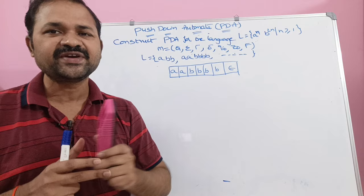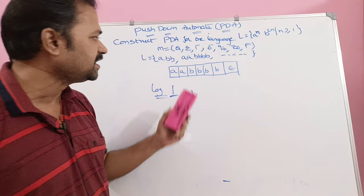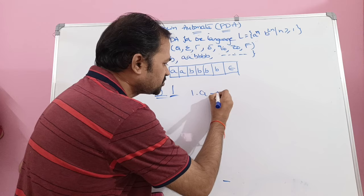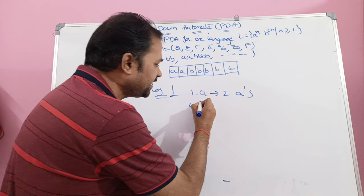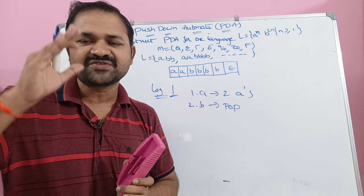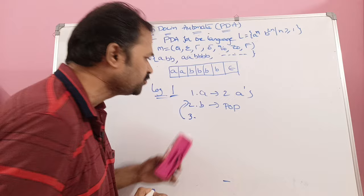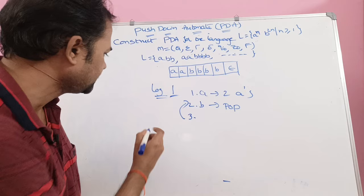Now let us see what is the logic. Here we have two logics. The first logic is: if we read 'a', since b's are double, then push 2 a's onto the stack. The second step is: if we read 'b', then perform the pop operation, so an 'a' will be popped from the stack. For the first pop operation, change the state — let the initial state be q naught, and change from q naught to q1. For the next pop operations, there is no need to change the state. Repeat step 2 until the entire input string is completely processed.